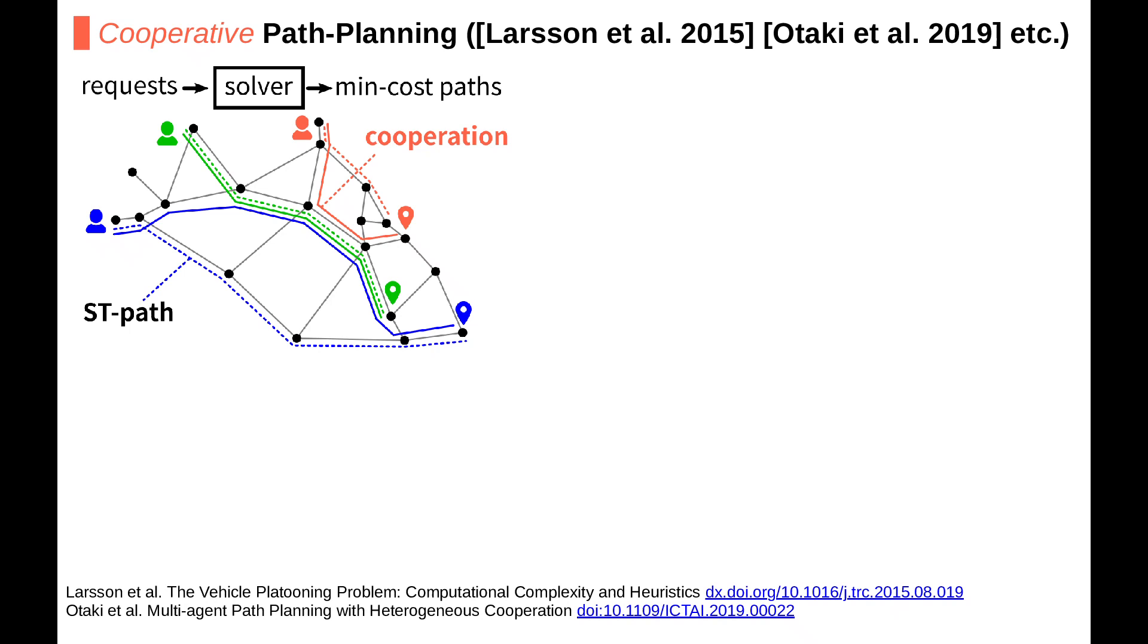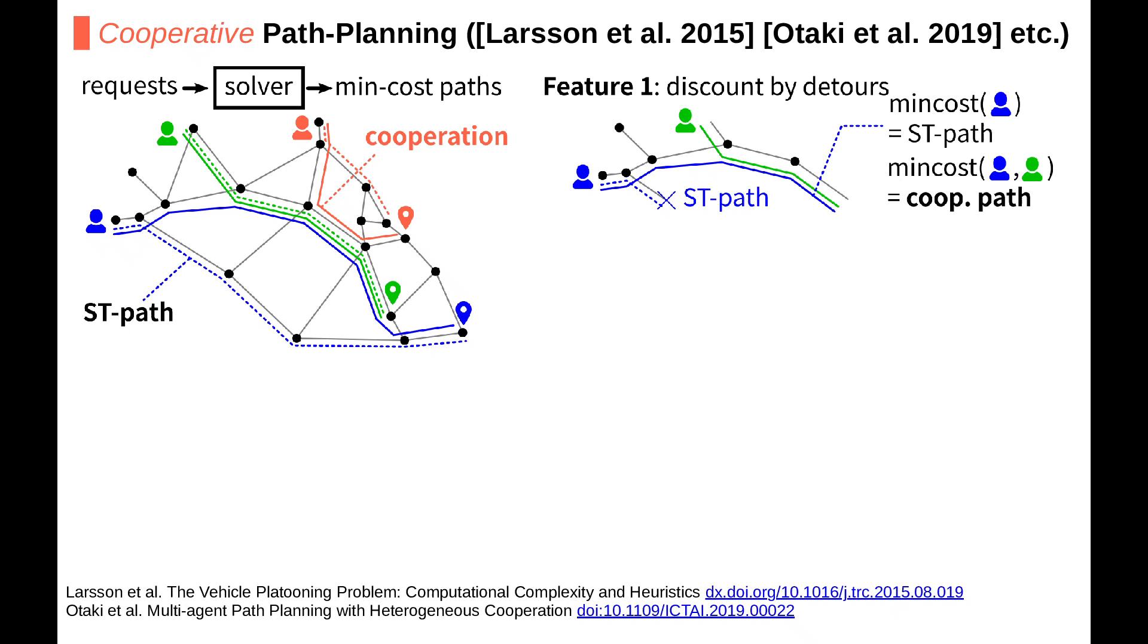Our motivation is to build an efficient solver to build cooperative paths for this problem class. We have two key features. The first one is we often take non-shortest paths because of the discount effect of the cooperation. For example, the minimum cost of the blue request is the shortest path, however we need to evaluate the cooperation of the blue and green to reduce the total travel cost.